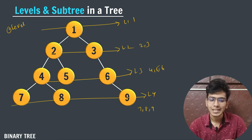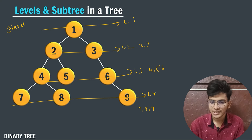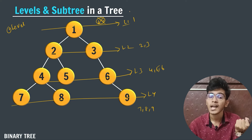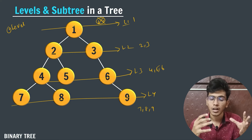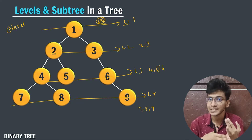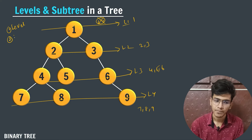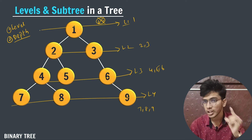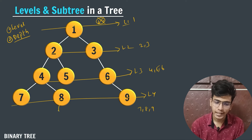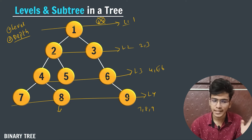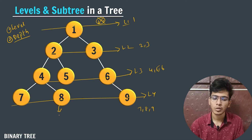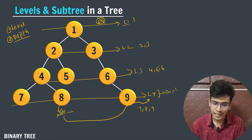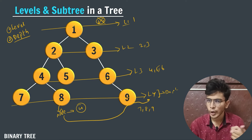Different programmers use different conventions — some start from level zero, but we are starting from level one. The second terminology is depth: for a particular node, its level number is its depth. For example, if you ask what is the depth of node eight, and node eight is in level four, then the depth of node eight is four.